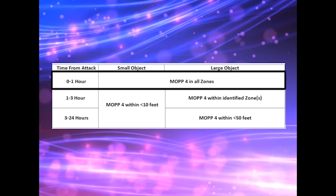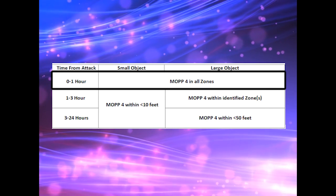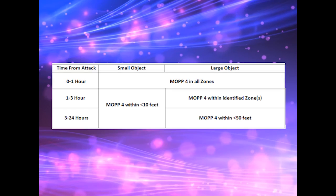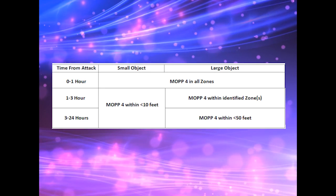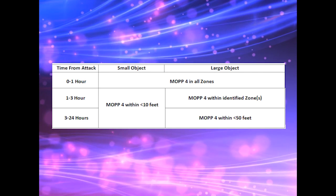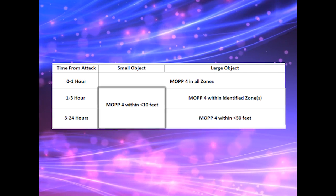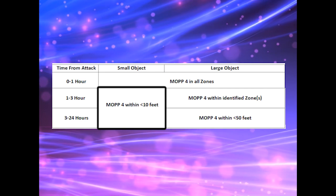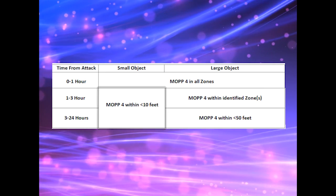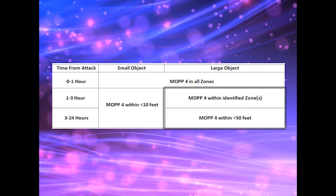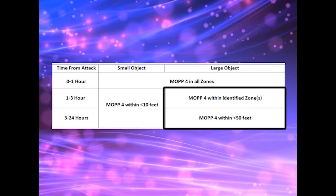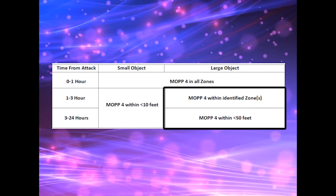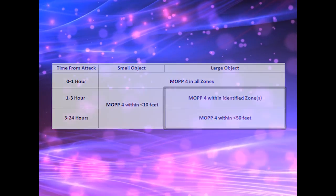Immediately following an attack, within 1 hour of contamination, MOP 4 should be worn in all zones whether dealing with a small or large contaminated asset. After the initial hour and up to 24 hours from the most recent attack, MOP 4 must be worn within 10 feet of small contaminated assets. For large objects, MOP 4 must be worn up to 3 hours after an attack and within 50 feet until 24 hours after an attack.